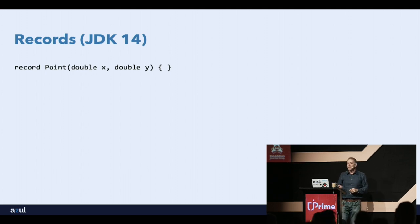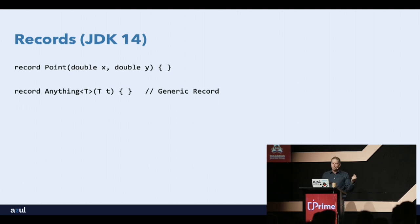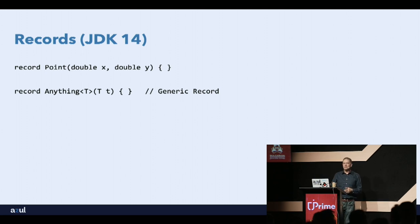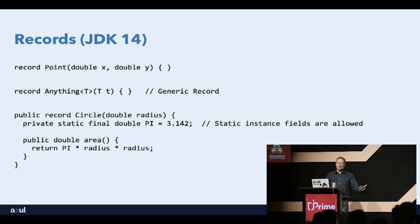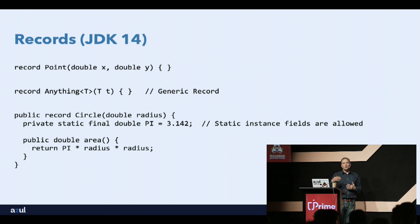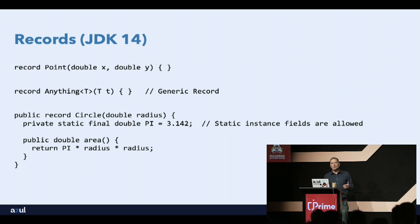With records, you simply write 'record Point(double x, double y)' — one line of code. A record is a special form of class, similar to how an enumeration is a special form of class. Records are flexible: you can make them generic, add static fields, and add additional behavior like methods. For example, a Circle record with a radius field can include a static PI constant and an area() method.